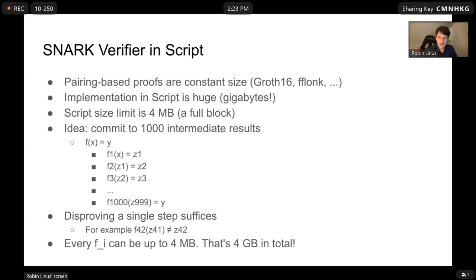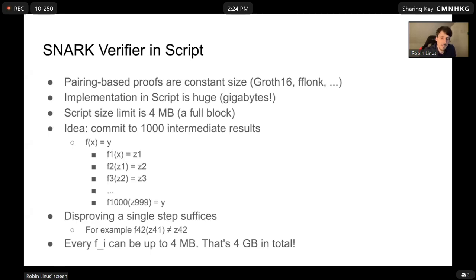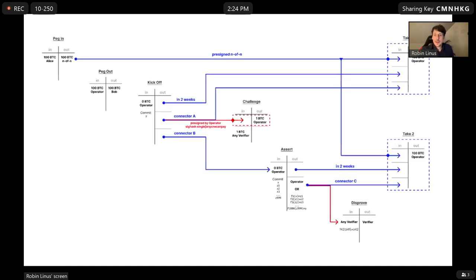That is the core of BitVM2 — it's just a two-step process. The operator makes a claim, committing to x, y, and all intermediate values. If any intermediate step is incorrect, it gets disproven in a single step — for example, f42 is executed. This is how we can essentially run more or less arbitrarily large scripts in Bitcoin, and we put that into our bridge design.